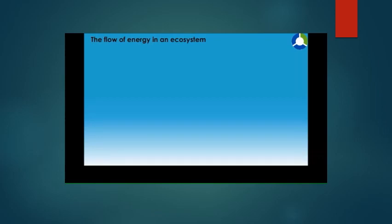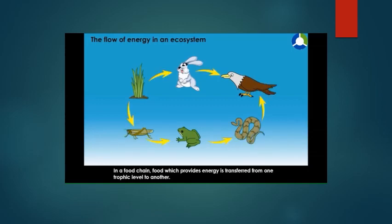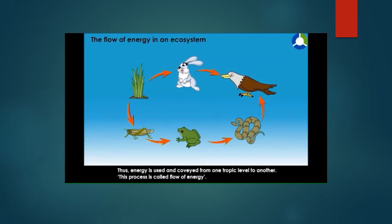The flow of energy in an ecosystem: in a food chain, food which provides energy is transferred from one trophic level to another. Energy is used and conveyed from one trophic level to another — this process is called flow of energy. Studies of various food chains show that the energy available at each successive level is 10 percent of the previous level.